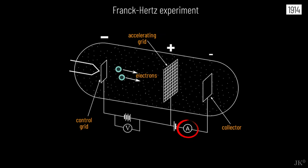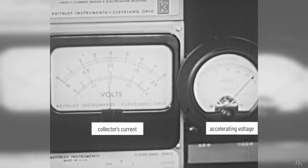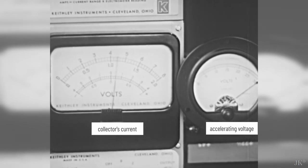A dropping current implies that less electrons are reaching the collector, meaning that those missing electrons lost their energy after colliding with the mercury atoms and could not overcome the repulsion generated by the negative collector because they had less energy than the stopping potential. This is precisely the signature of inelastic collisions that Franck and Hertz were looking for. But something quite unexpected also happened. The drops appear at regular intervals of accelerating potential.